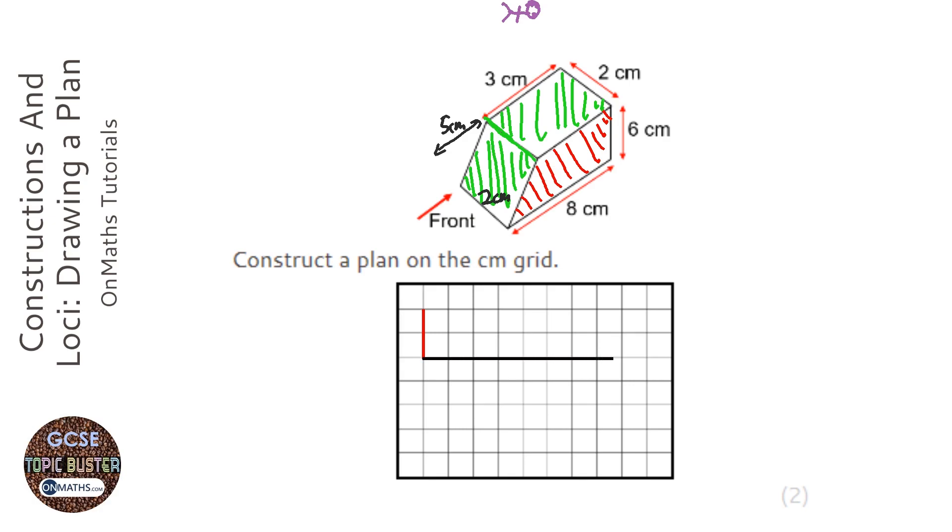Now it's really important - any changes in elevation or any joins at all, you show them on the diagram. So that join is five centimeters across, which would be here. Any changes in elevation, any joins, anything at all, just draw a line across to show them on the plan or front elevation or side elevation.